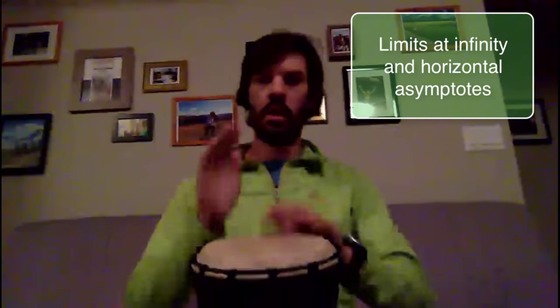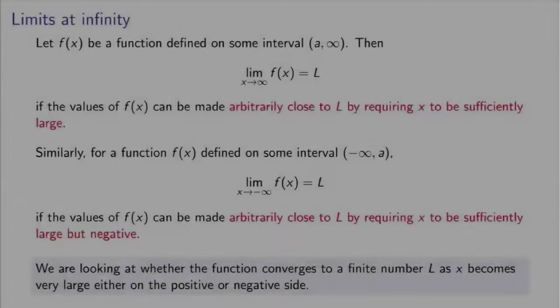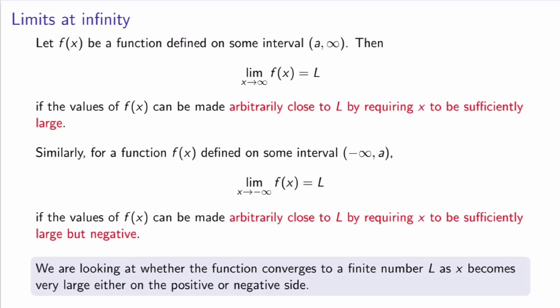Limits at infinity and horizontal asymptotes — this is what we're going to see in this video. We're going to see limits at infinity and horizontal asymptotes. Let me now introduce limits at infinity. This is a new type of limit that we haven't studied yet, and it is different from the infinite limits that we saw previously.